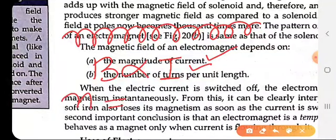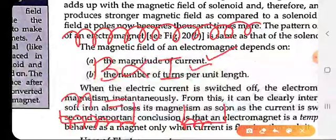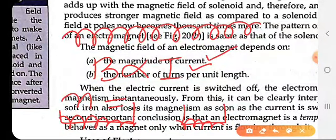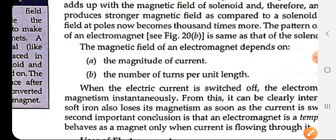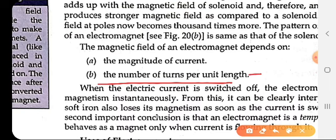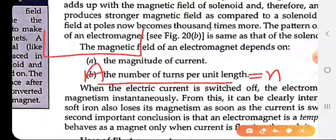And the other factor is the more the number of turns per unit length. In a particular given length, if we increase the number of turns from the insulated copper wire, it depends upon this. We denote this as small n.